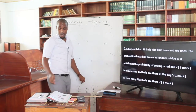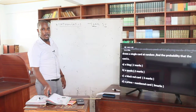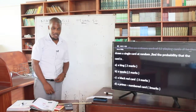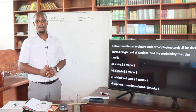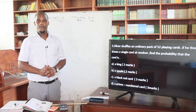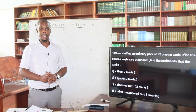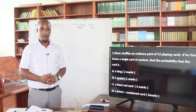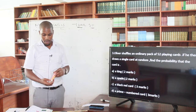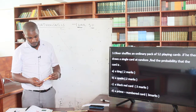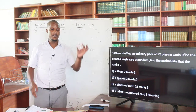In equation number 3, we are told that Oliver shuffles an ordinary pack of 52 cards. If he then draws a single card at random, find the probability that the card is a king, a spade, a black card, and a prime numbered card. A pack usually has 52 cards.